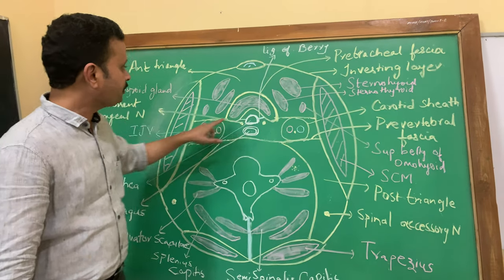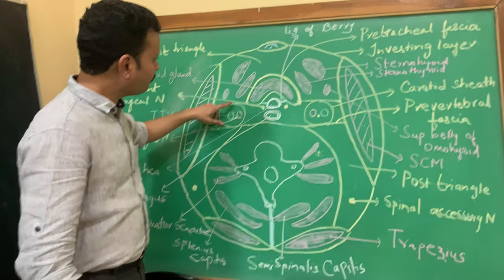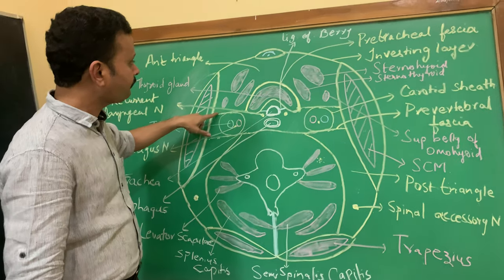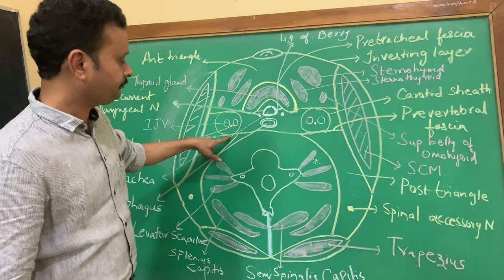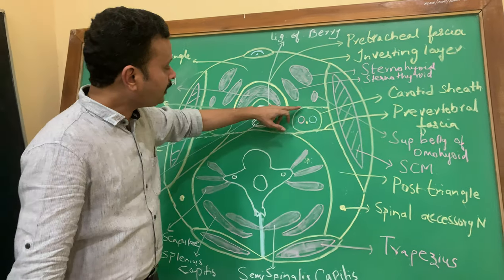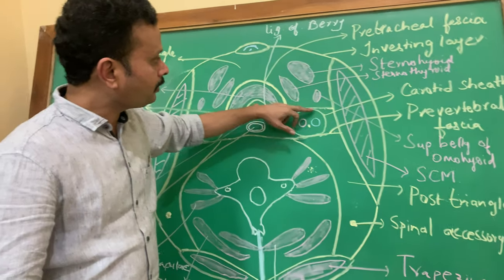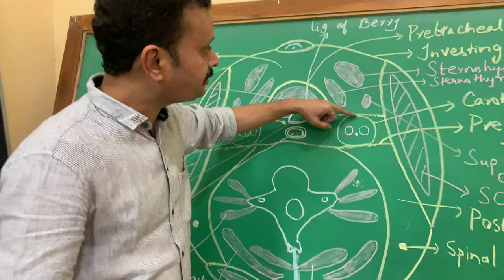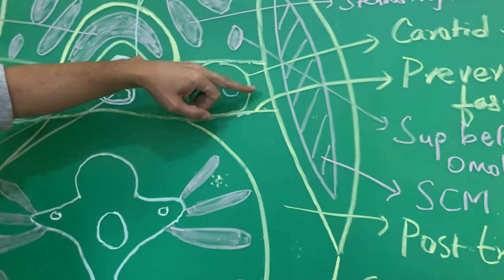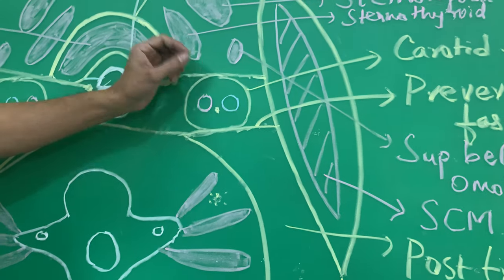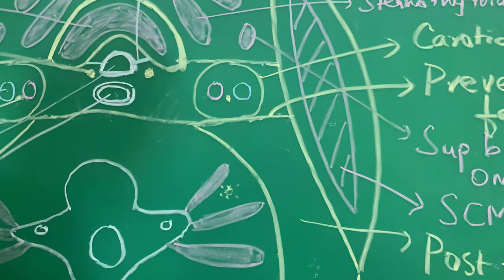The anterior wall of the sheath is formed by the pre-tracheal fascia, and the posterior wall of the sheath is formed by the pre-vertebral fascia. The medial part of the sheath is thick, whereas the lateral part of the sheath is ill-defined or thin, to allow the expansion of the internal jugular vein during venous return.